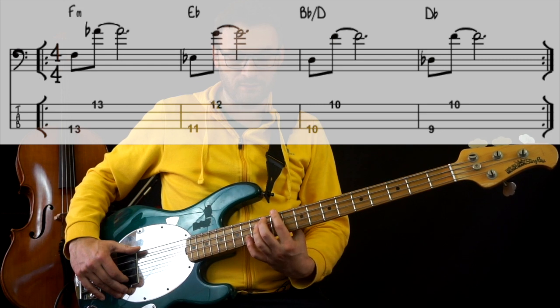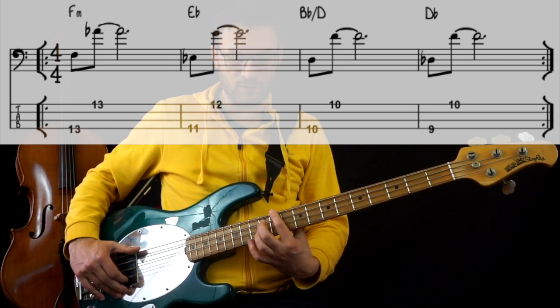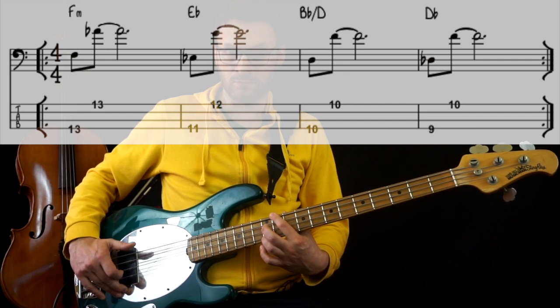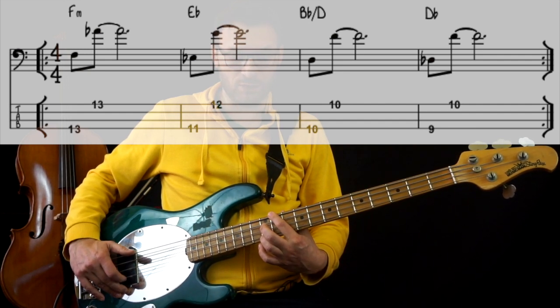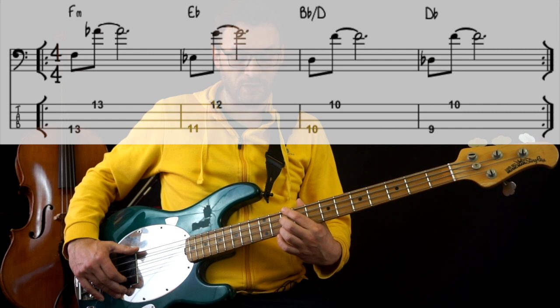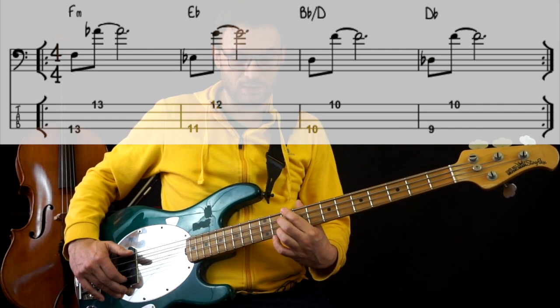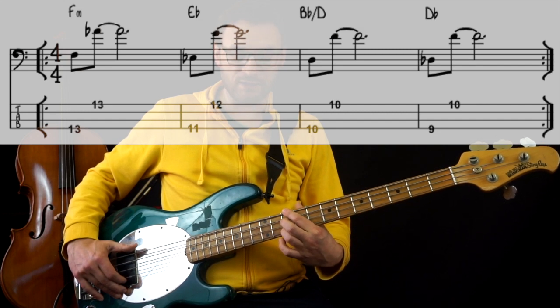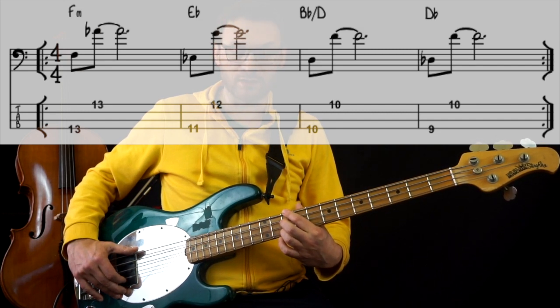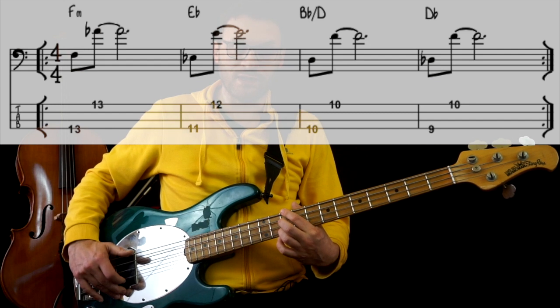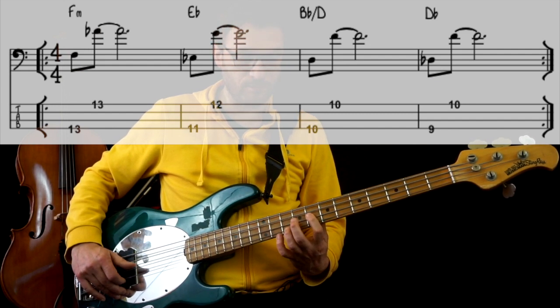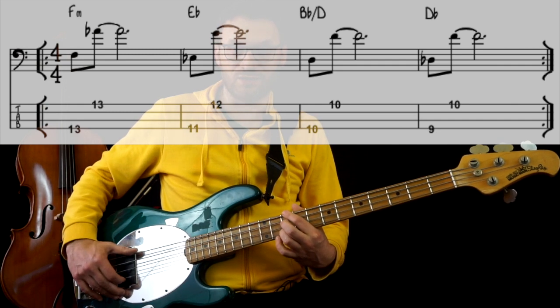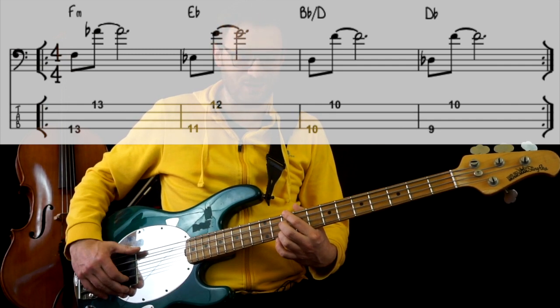Then E♭ major, fret 11 and fret 12. The third I play D and F, fret 10 on E string and fret 10 on G string. This is actually a B♭ major chord, but played on bass it could also be seen as a D minor bichord.